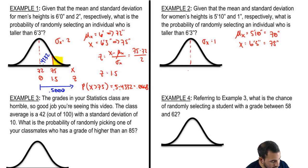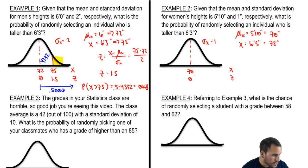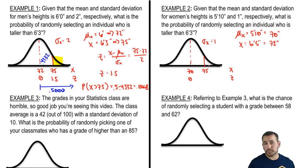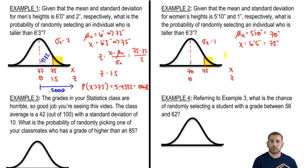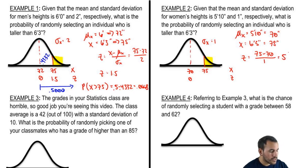Our next step is to get the z-score. z = (x - μ) / σ = (75 - 70) / 1 = 5. Our z-score is 5, which is very different from the 1.5 we got for men. Women are shorter on average and the data is less spread out, so the same height of 75 inches is far more extreme relative to the women's distribution.